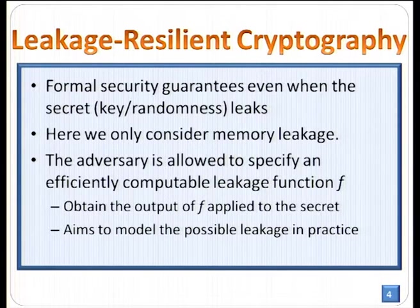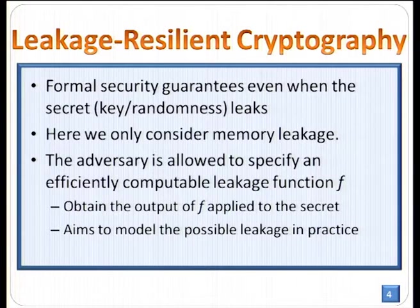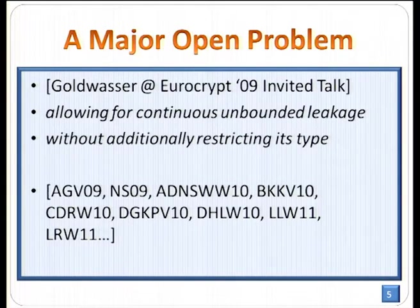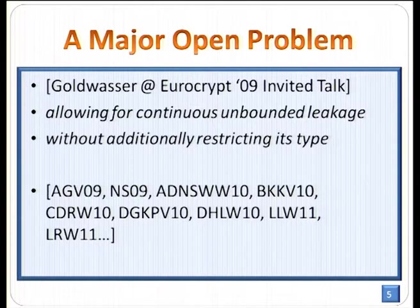In these models, the adversary is allowed to specify an efficiently computable leakage function, such that the adversary can obtain the output of F applied to the secret. It aims to model all possible leakage in practice, including side-channel attacks. A major open problem in this field was discussed here at EuroCrypt a few years ago: to allow for continuous unbounded leakage without additionally restricting its type. There are two main categories here, and there has been a lot of follow-on work.